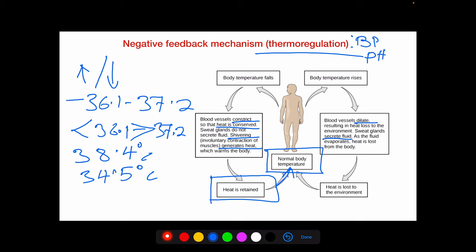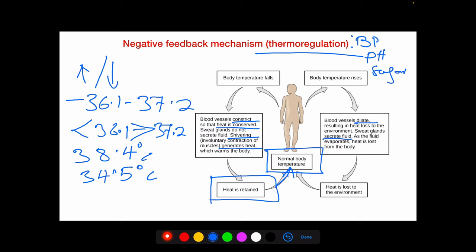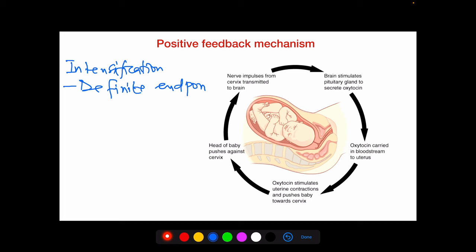The other type of homeostatic mechanism is positive feedback, where the stimulus is intensified rather than reversed. Instead of reversing the stimulus, the body promotes or enhances it. Positive feedback is only normal when there is a definite end point; otherwise the organism could die, so it is activated only when needed.